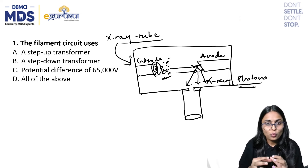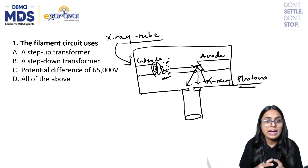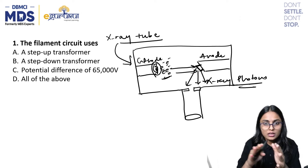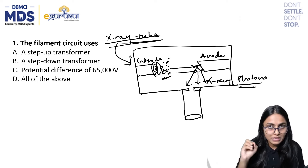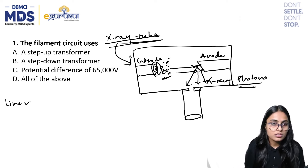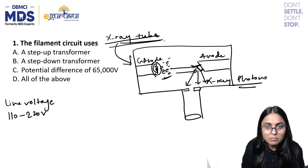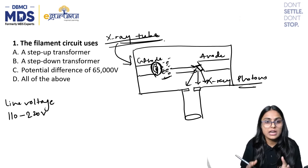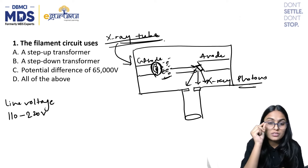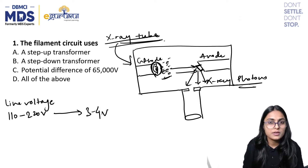What exactly happens with the transformers inside the X-ray machine? When you studied the structure of the X-ray tube, we had a step-up transformer, step-down transformer, and auto transformer. When you switch on the X-ray machine, the line voltage is normally 110 to 220 volts. To heat up the tungsten filament, we do not require that much voltage — we only need 3 to 4 volts to heat up just 2 mm of tungsten filament.